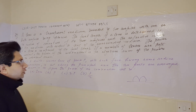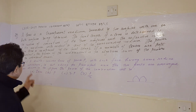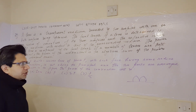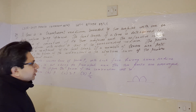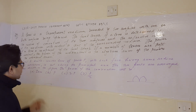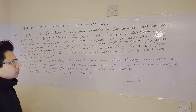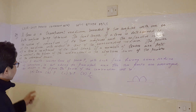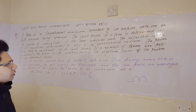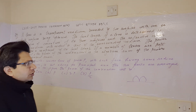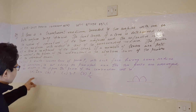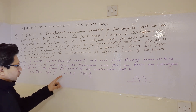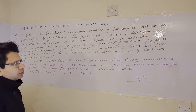The fourth part of this problem is: a double convex lens of power P, with each face having the same radius of curvature, is cut along the principal axis. The two parts are arranged as shown in the figure. The power of the combination will be — option A: 0, option B: P, option C: 2P, and option D: P/2.